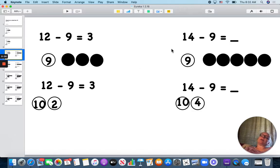Here's another example. 14 minus 9. So we're going to say 9 and count on. 9, 10, 11, 12, 13, 14. I have drawn 5 circles, so I know 14 minus 9 equals 5.